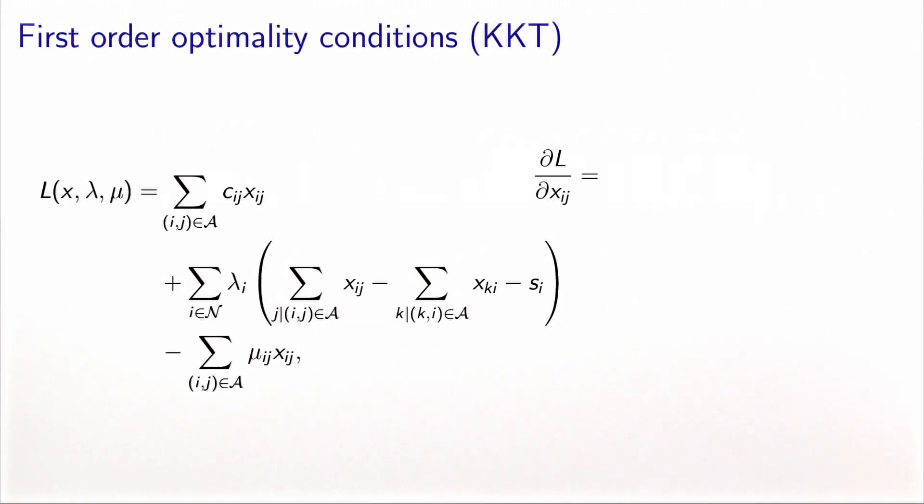The first order optimality conditions state that the derivatives of this Lagrangian must be equal to zero. These conditions are sometimes called the KKT. So let's calculate the derivatives of the Lagrangian with respect to the flow vector. For the first term here, the derivative with respect to xij is simply cij.